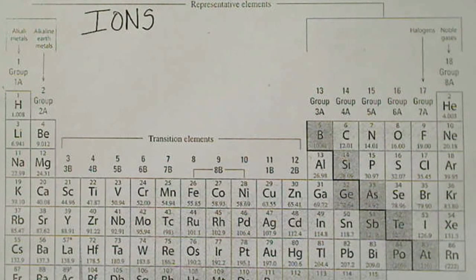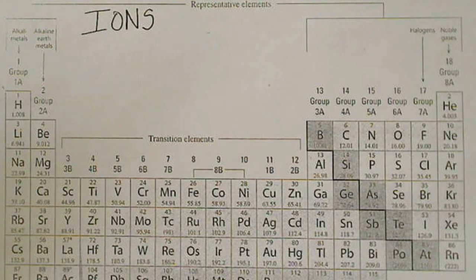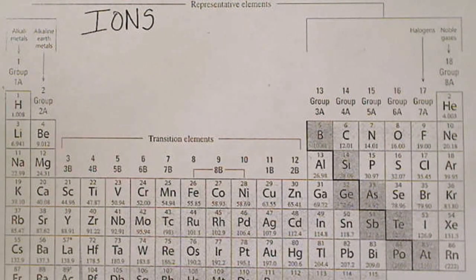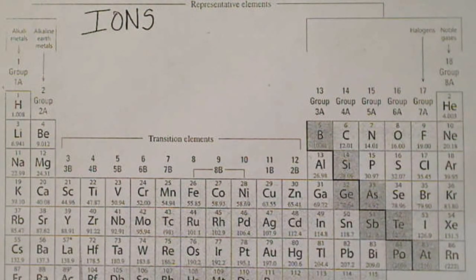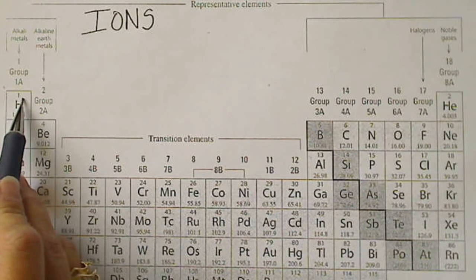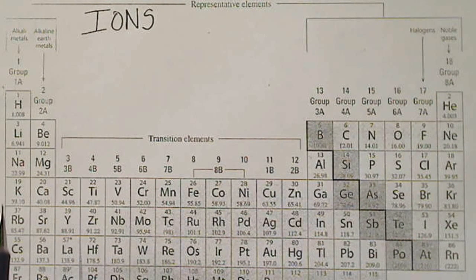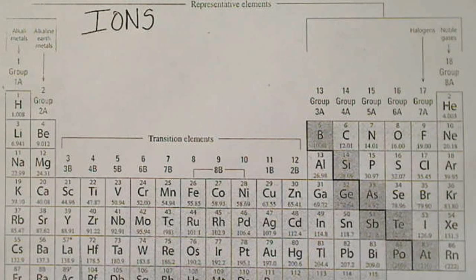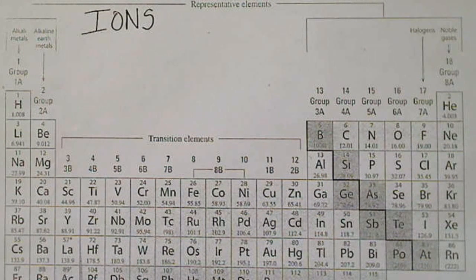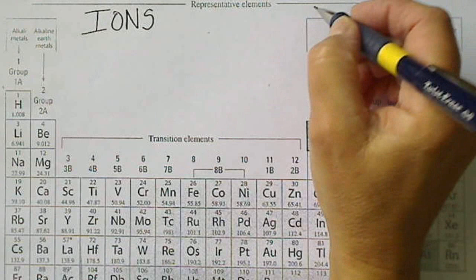If we look at the periodic table of elements, or what I like to call the periodic table of atoms, we know that the atomic number, which is the number that the atom has above its symbol, is the number of protons. On the periodic table, that is also going to equal the number of electrons.